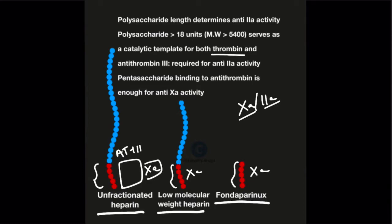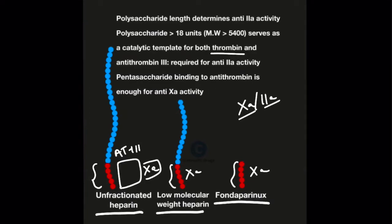We will move on to anti-2A activity. For anti-2A activity, along with binding of antithrombin 3, the polysaccharide units must be more than 18 units in length. These longer polysaccharide units will serve as a catalytic template to which both antithrombin 3 and activated factor 2 will be bound.